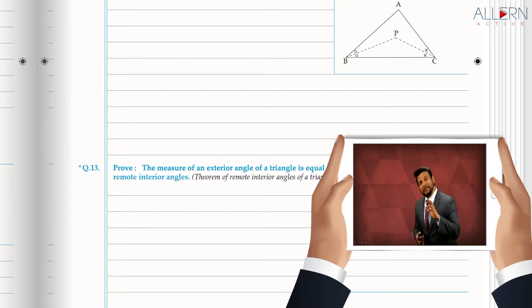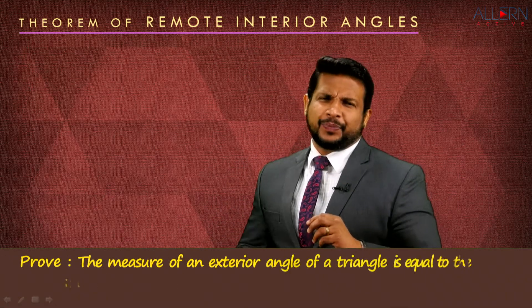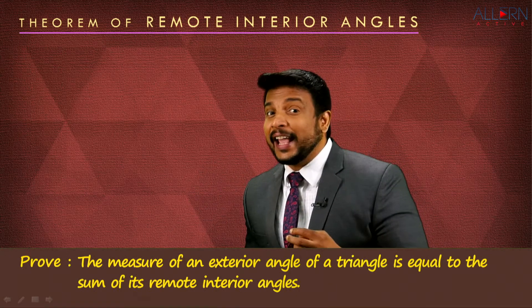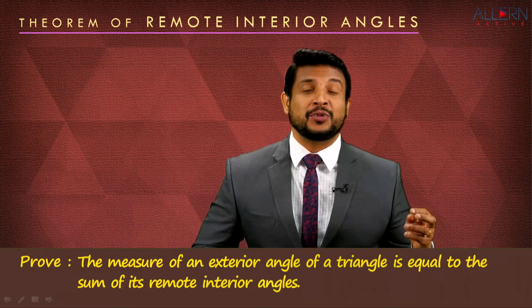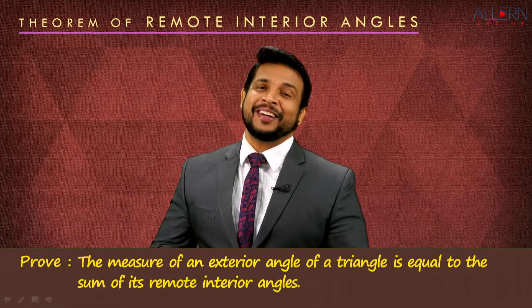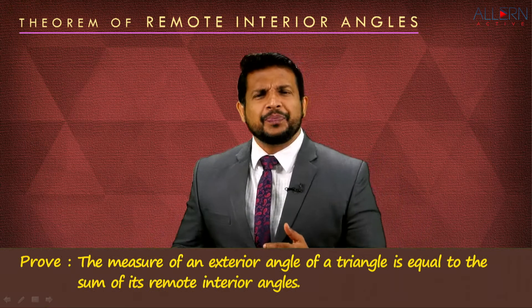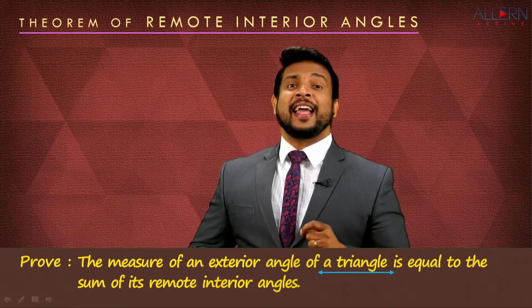Hi dear child, we are going to do something very interesting — we are going to do the proof of the theorem of remote interior angles. We know the statement of the theorem. It says that the measure of an exterior angle of a triangle is equal to the sum of the measures of its remote interior angles.